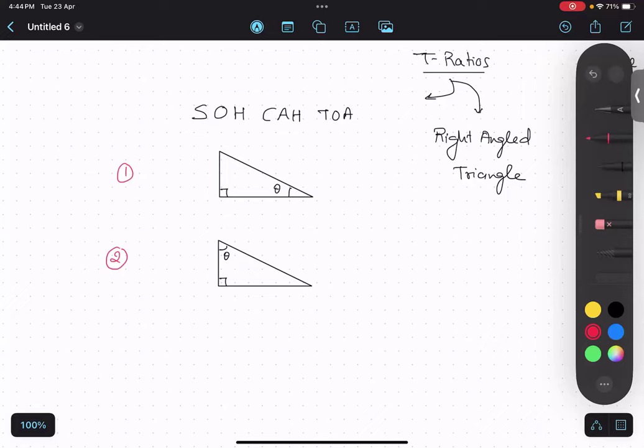So opposite will be the... Tell me the name, ABC. AB. Yeah, AB will be opposite. So this will be opposite.